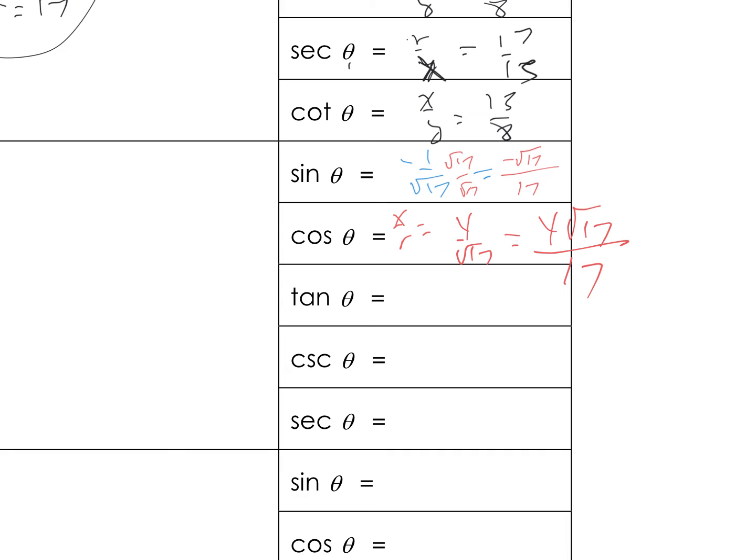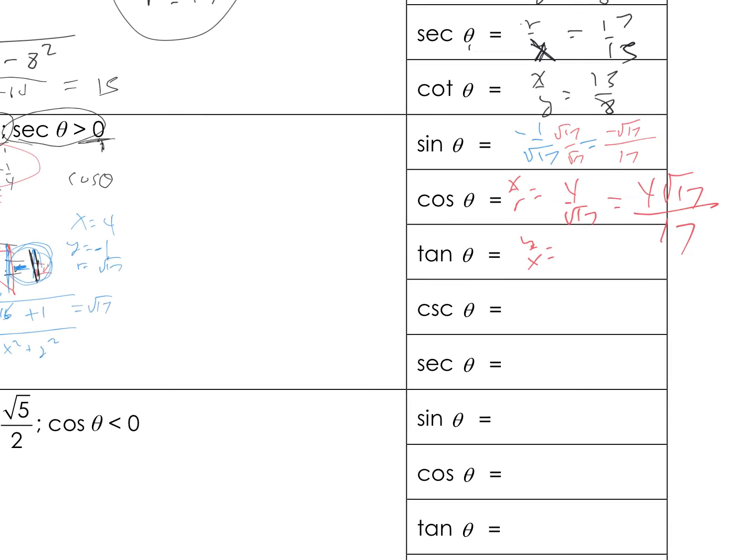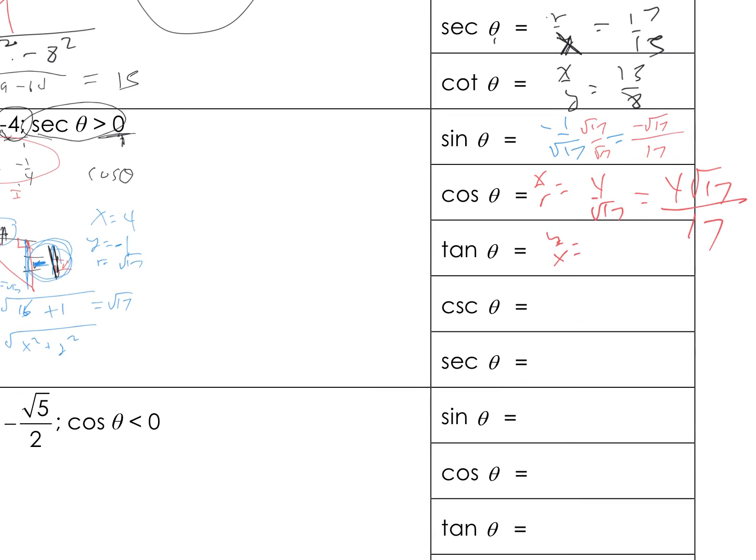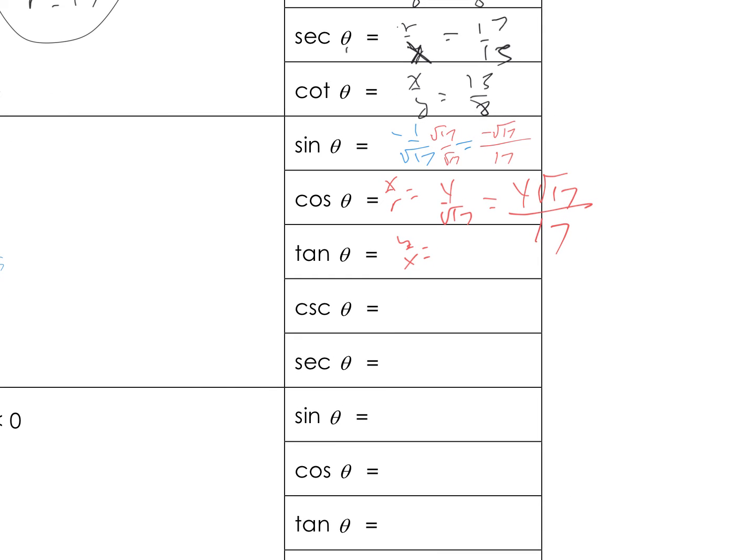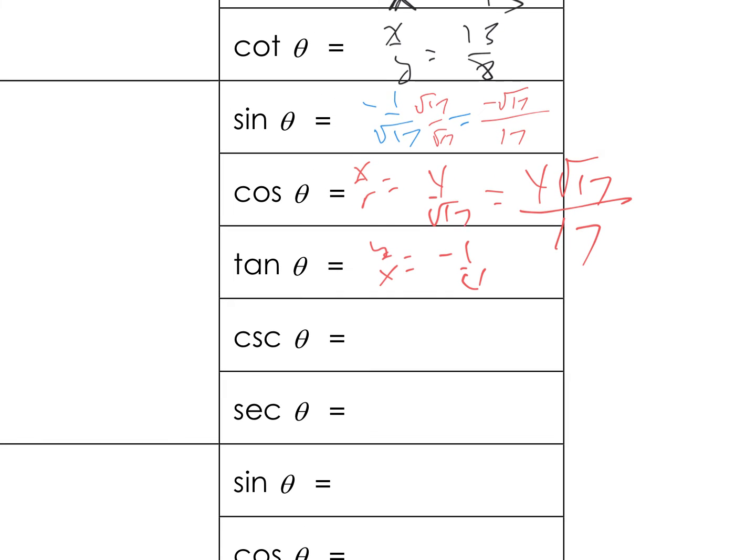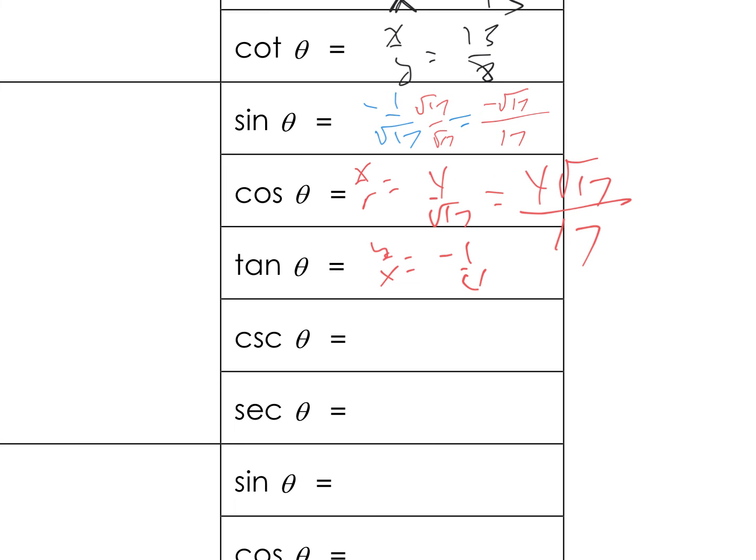Tangent is Y over X over what? Negative 1 fourth. Now, to do cosecant, I flip the sine. Don't flip this one. Flip this one. Negatives. No. Square root of 17 over 1. And secant. Don't flip this one. Flip this one.